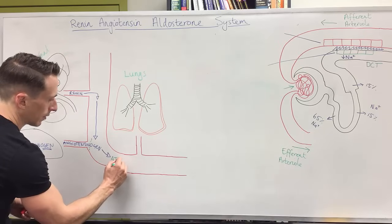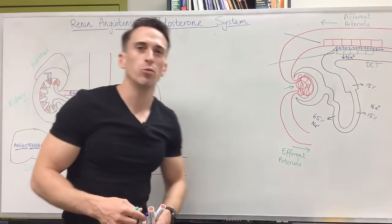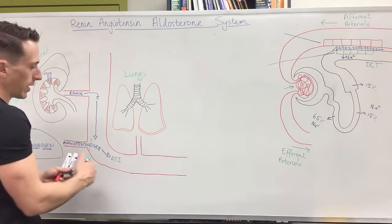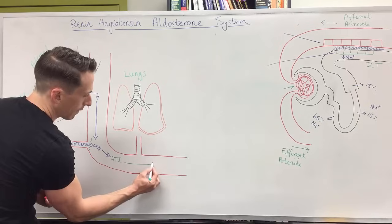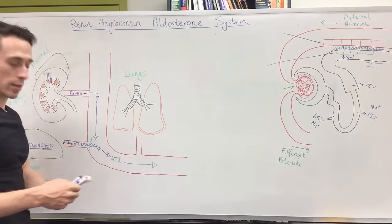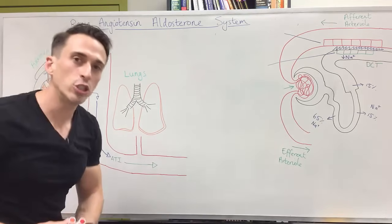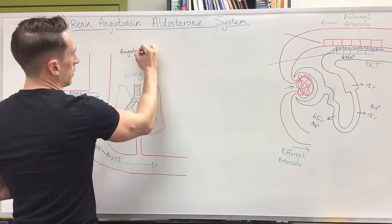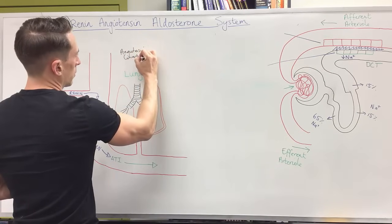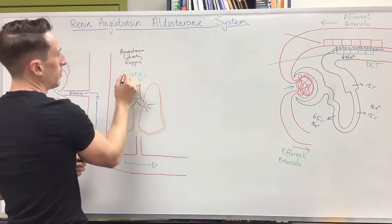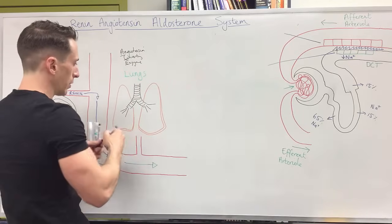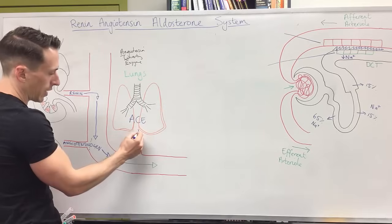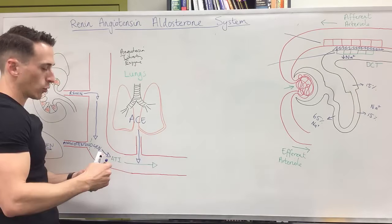Angiotensin-1 is a very slight vasoconstrictor but clinically doesn't matter much. As angiotensin-1 floats around the bloodstream it inevitably reaches the lungs. The lung produces the greatest amount of an enzyme called angiotensin-converting enzyme — ACE. Angiotensin-converting enzyme converts angiotensin-1 into angiotensin-2.